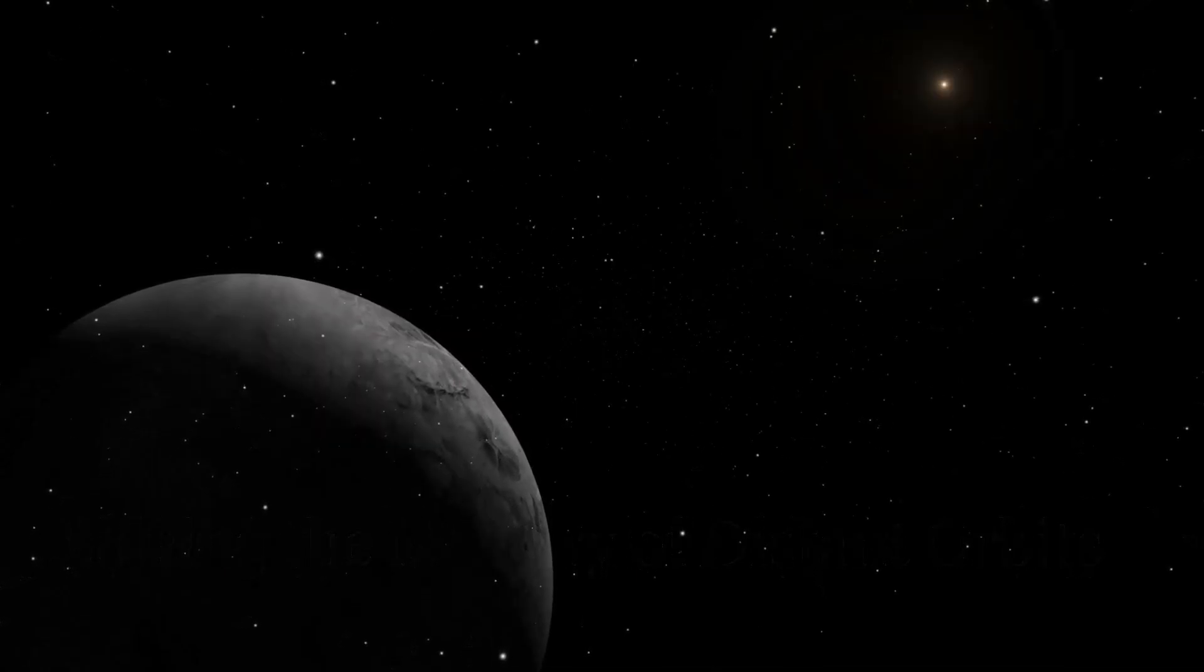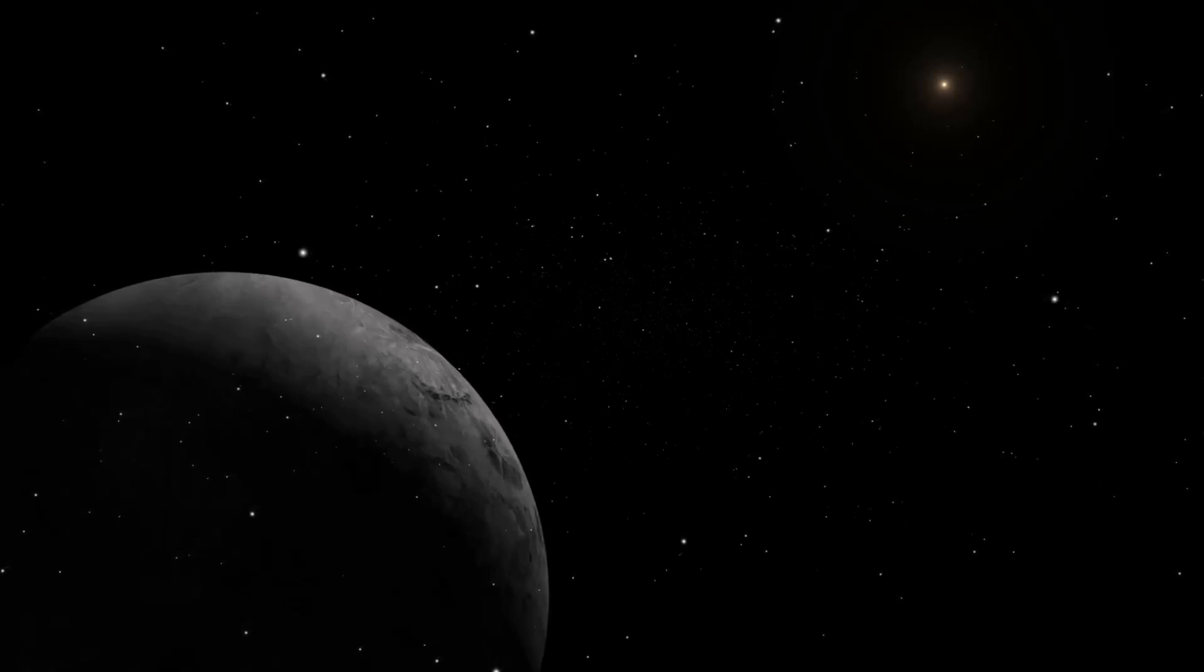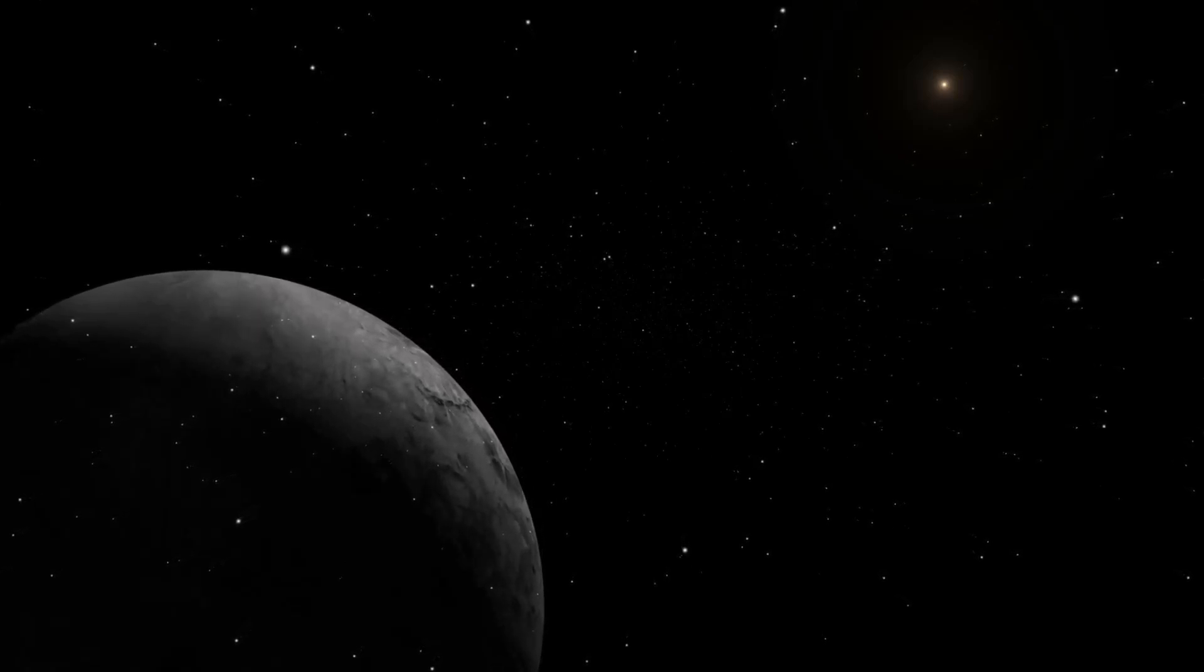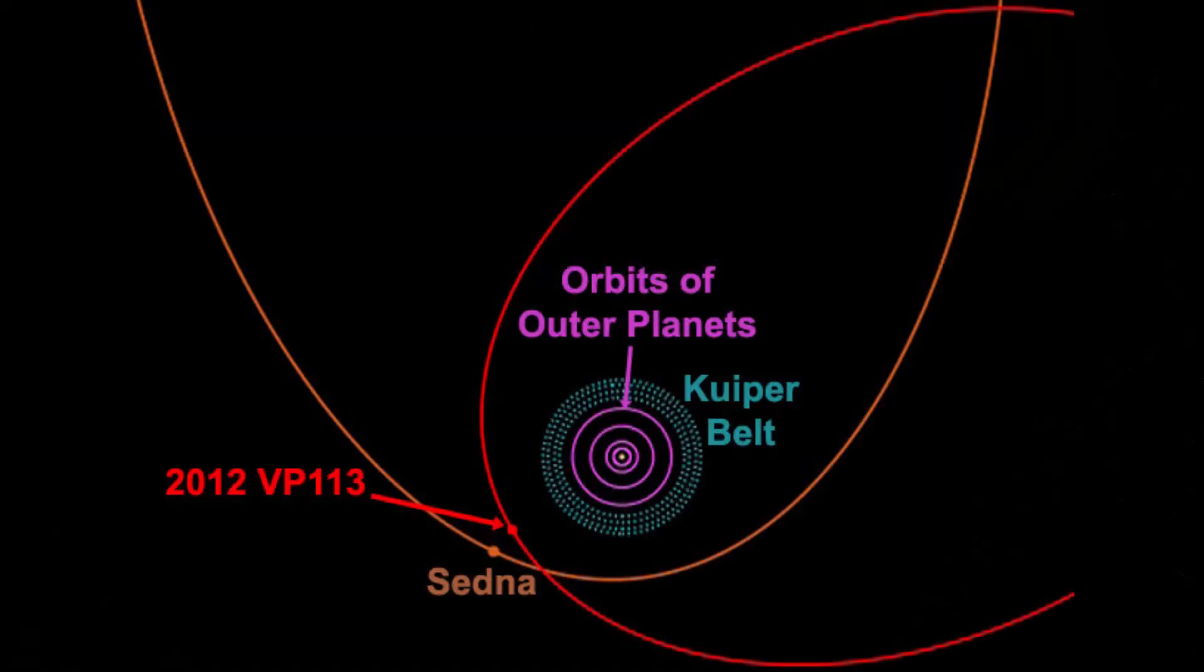The Kuiper Belt, a region of icy bodies beyond Neptune, holds clues to the early solar system's formation. Among these icy remnants are Sedna and 2012 VP113, two of the most distant objects known in our solar system. Their peculiar orbits, elongated and tilted compared to the plane of the planets, have long puzzled astronomers.